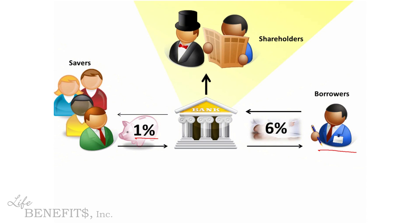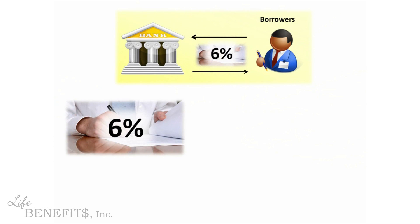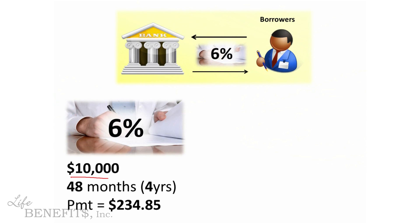Now let's take a closer look at this 6% loan and see what the bank is really making here. Let's assume this loan was for $10,000 over a four-year period. That means there are 48 monthly payments, and the payments are $234.85 each. Now let's find the real volume of interest that the bank makes on this loan. You might say we already know the 6% right up here — isn't that the interest?